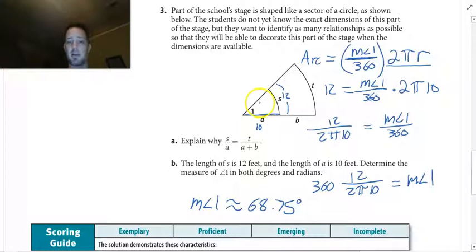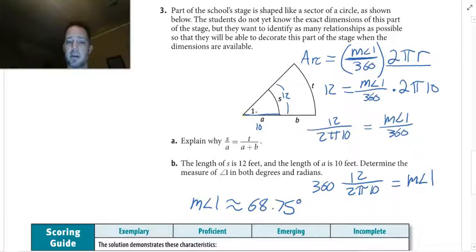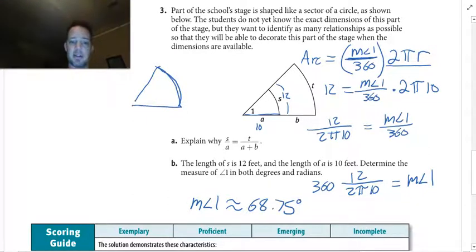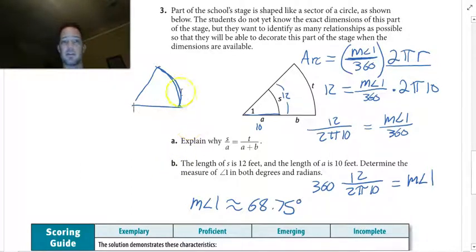That's a reasonable answer — if you have a radius of 10 and an arc length of 12, about a 68–70 degree angle makes sense. Alright, we're done here, see you on the next one.